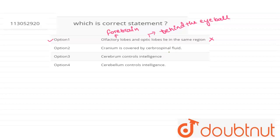What is cranium? Cranium is known as brain box because in this cranium, our brain is located.